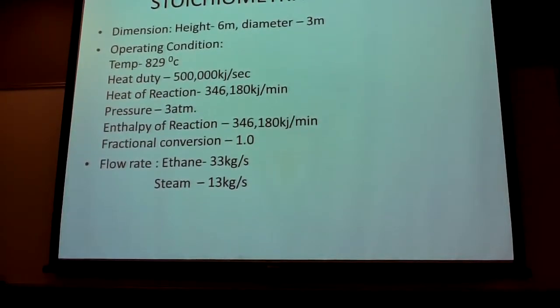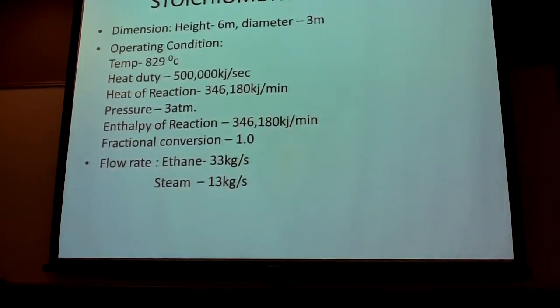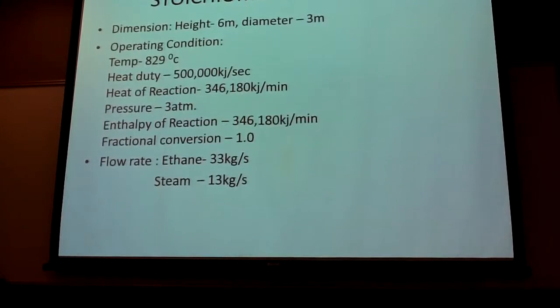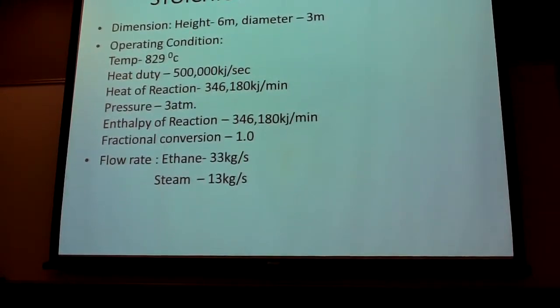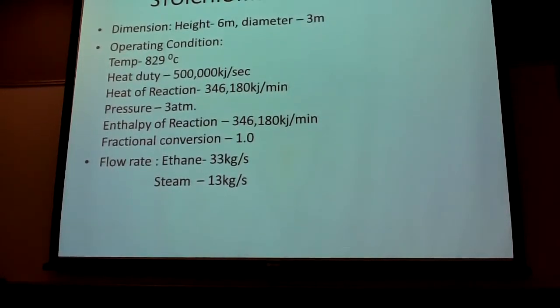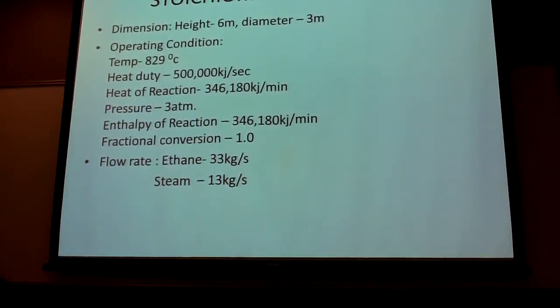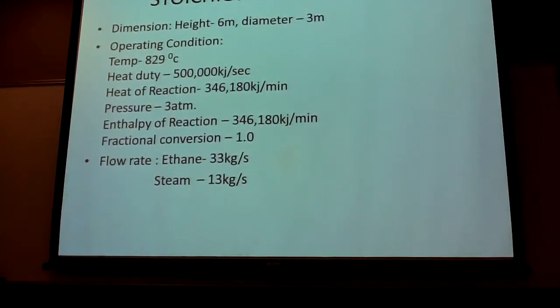The enthalpy of the reaction is 346,180 kilojoules per minute. The fractional conversion is about 1. The flow rate of ethane going into the mixing unit is 33 kilograms per second, and the steam is 13 kilograms per second.